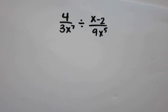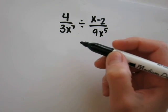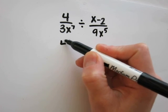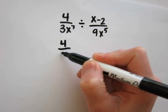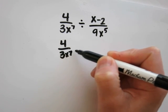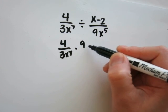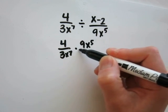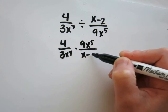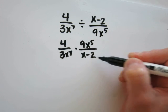4 over 3x to the 7th power, divided by x minus 2 over 9x to the 5th power. My first step will be to rewrite the problem. Since I'm dividing fractions, I will multiply by the reciprocal, which will be 9x to the 5th power over x minus 2.